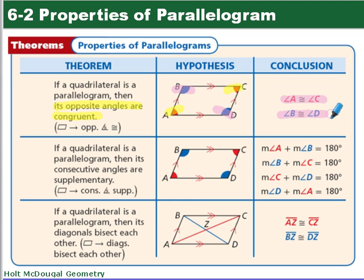Next theorem says if a quadrilateral is a parallelogram, consecutive angles are supplementary. Consecutive means next to each other. So in this case, A and D are consecutive.